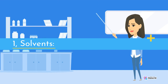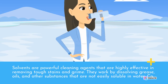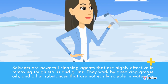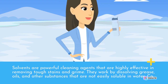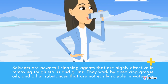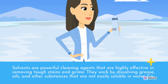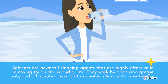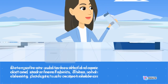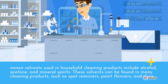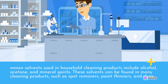1. Solvents. Solvents are powerful cleaning agents that are highly effective in removing tough stains and grime. They work by dissolving grease, oils, and other substances that are not easily soluble in water. Common solvents used in household cleaning products include alcohol, acetone, and mineral spirits.